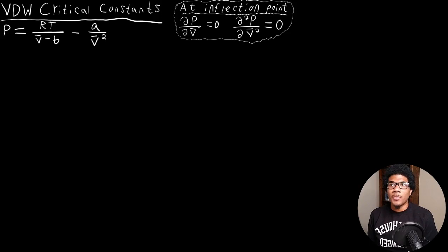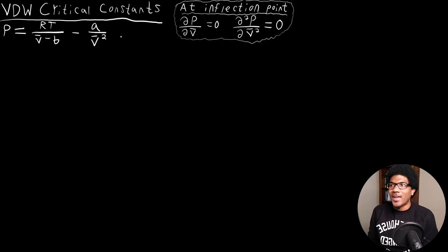Since we have a state equation for pressure, we can use the fact that at the inflection point these derivatives are going to be equal to zero. What we can do is derive explicit expressions for the critical constants in terms of the Van der Waals coefficients a and b.